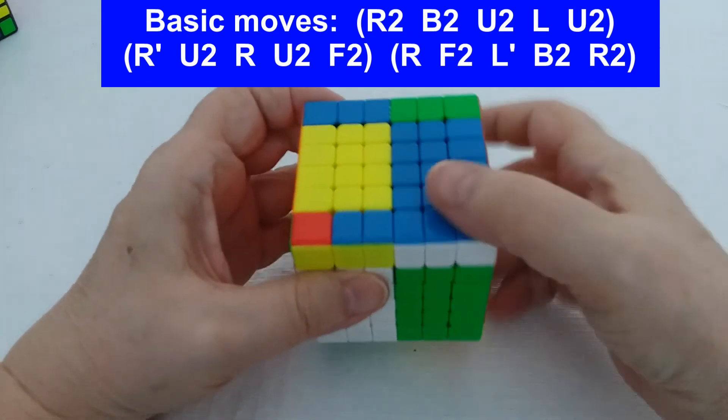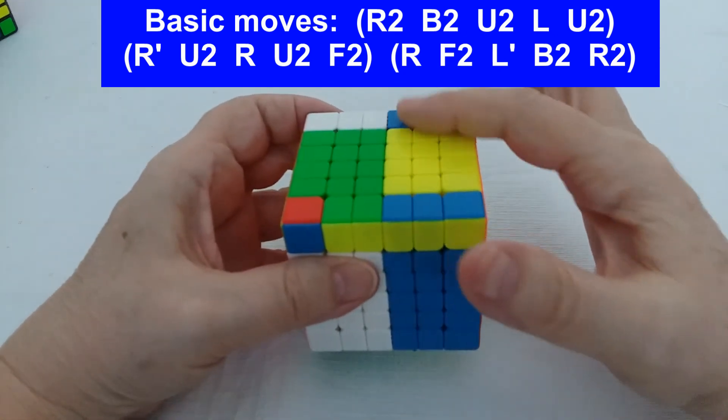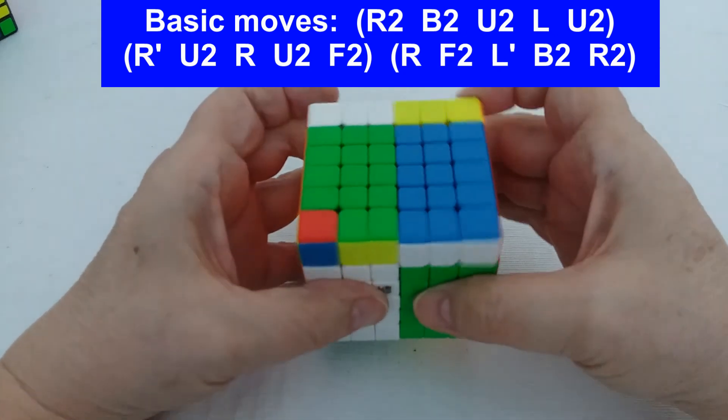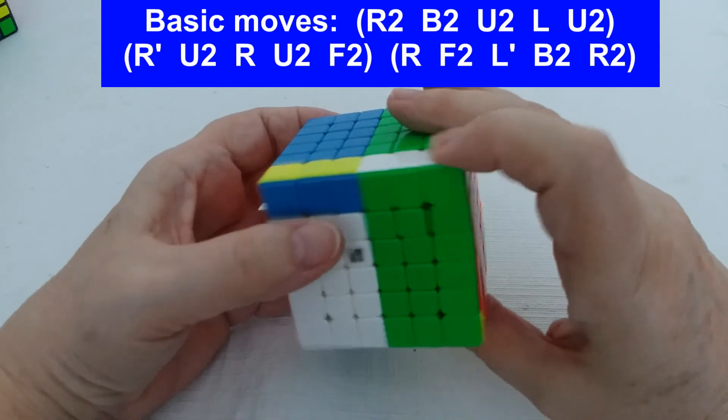Then the next five are: these R toward me, U2, these R away, U2, and an F2.